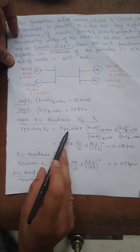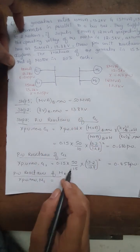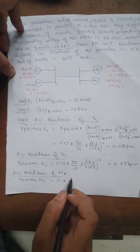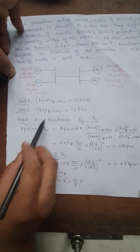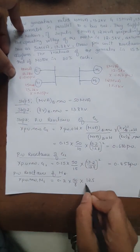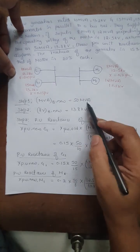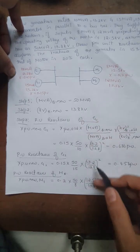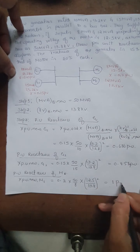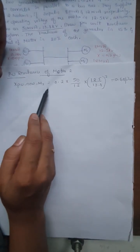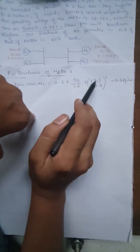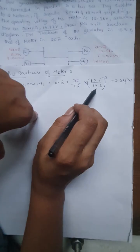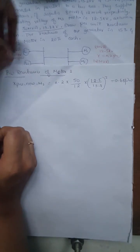For motor 1, using the same formula: X(pu, new) = 0.2 × (50 / 8) × (12.5 / 13.8)² = 1.0 per unit. The old kV base is 12.5 kV and the new base voltage is 13.8 kV, which is the common base for all components. For motor 2: X(pu, new) = 0.2 × (50 / 12) × (12.5 / 13.8)², with old MVA = 12 MVA and old kV = 12.5 kV, new kV = 13.8 kV.